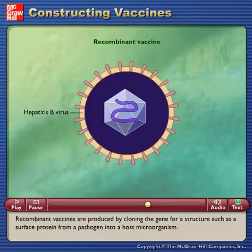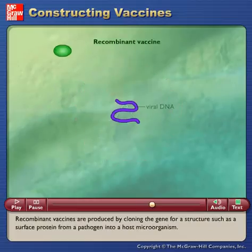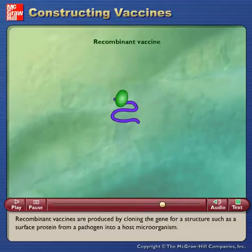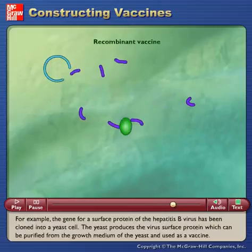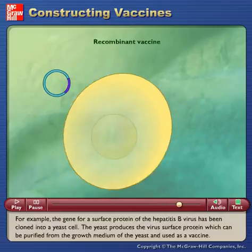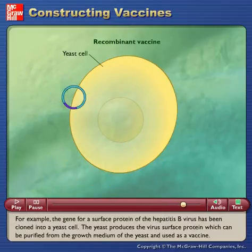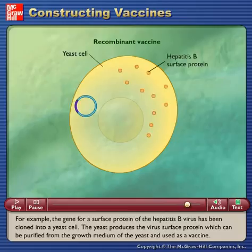Recombinant vaccines are produced by cloning the gene for a structure, such as a surface protein from a pathogen, into a host microorganism. For example, the gene for a surface protein of the hepatitis B virus has been cloned into a yeast cell. The yeast produces the virus surface protein, which can be purified from the growth medium of the yeast and used as a vaccine.